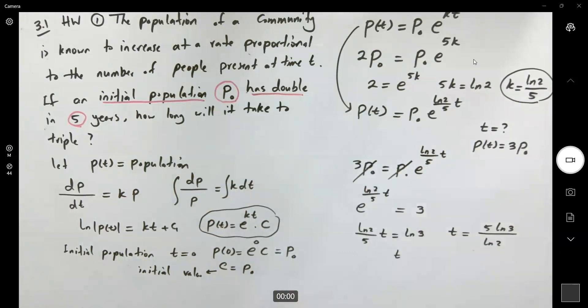This is pure algebra. Let's do the calculation: t ≈ 7.9 years.